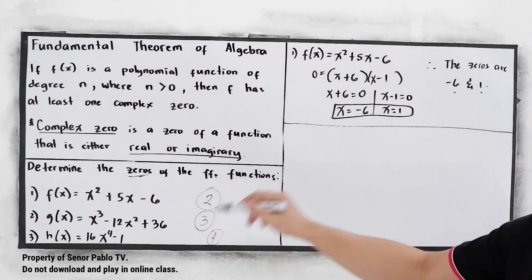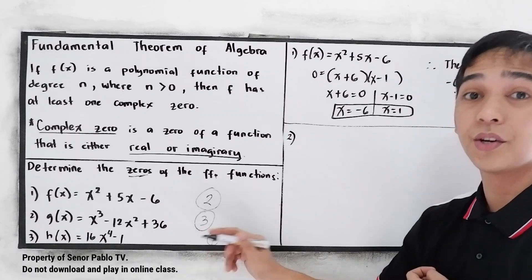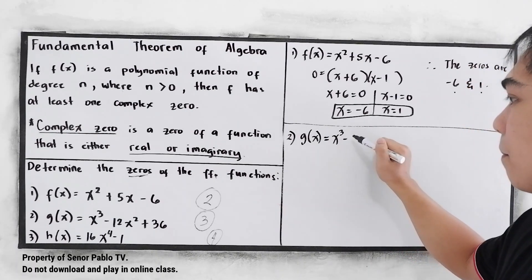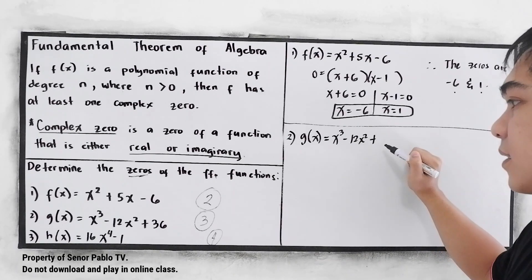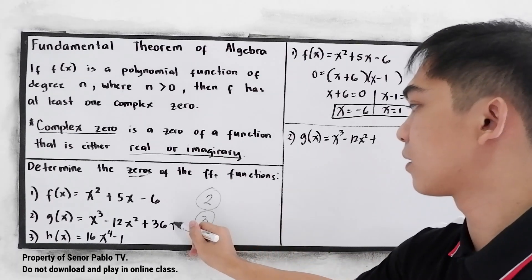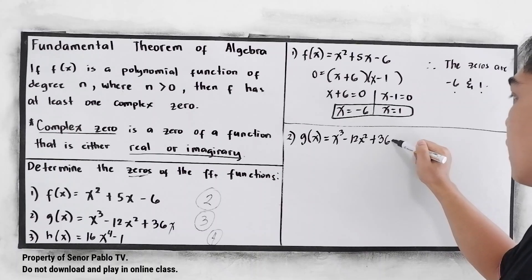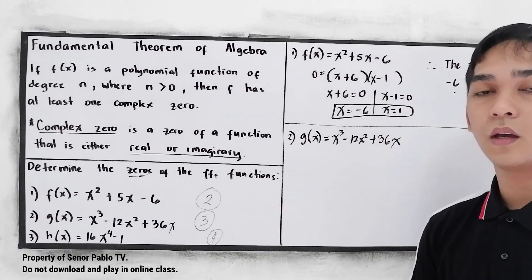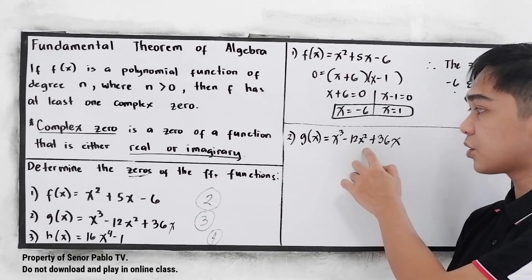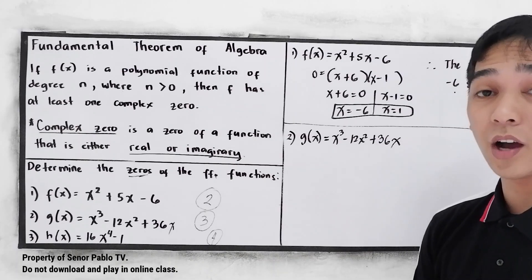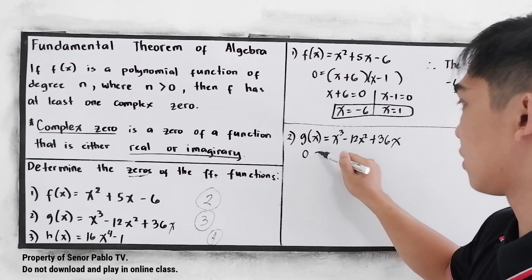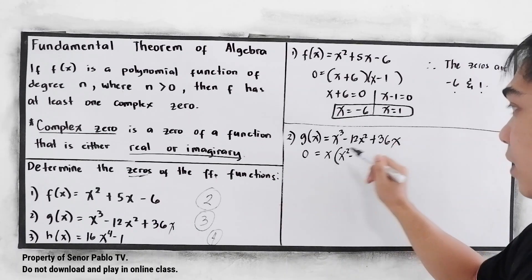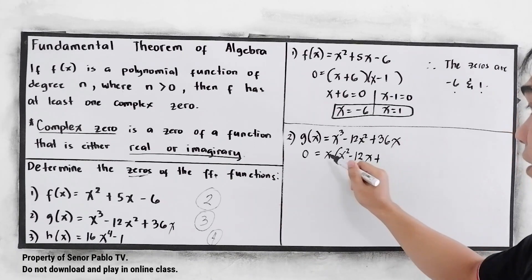Next, number 2. We are expecting 3 zeros. So g of x is equal to x cubed minus 12x squared plus 36x. Notice that in each term we have x, so we need to factor out x as the common factor. So we get: 0 equals x times (x squared minus 12x plus 36).